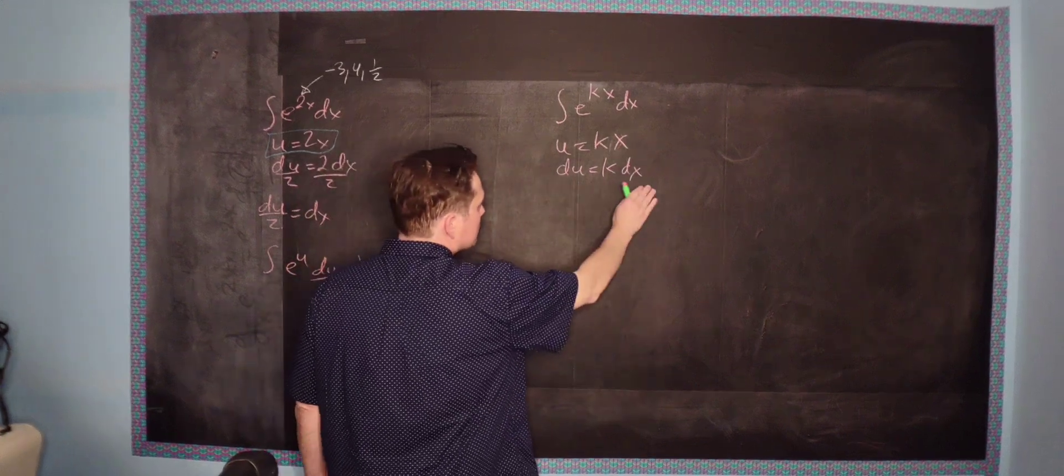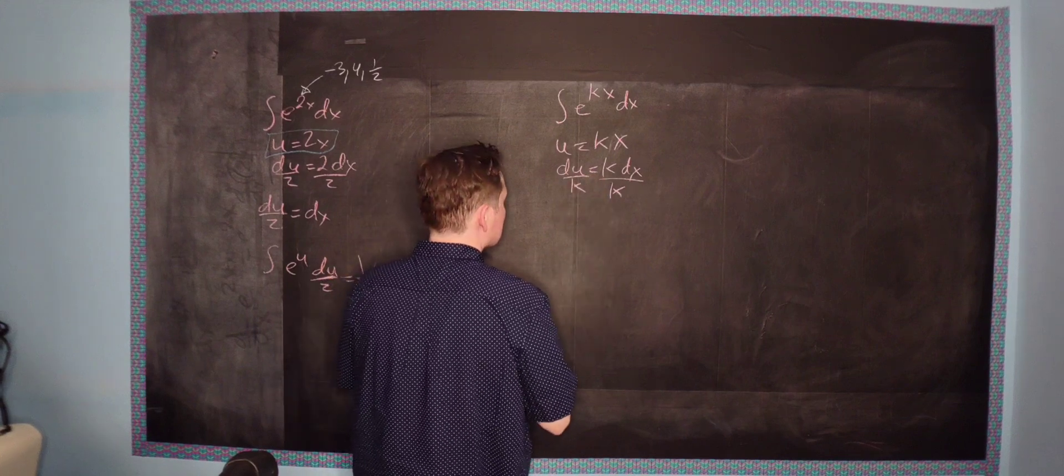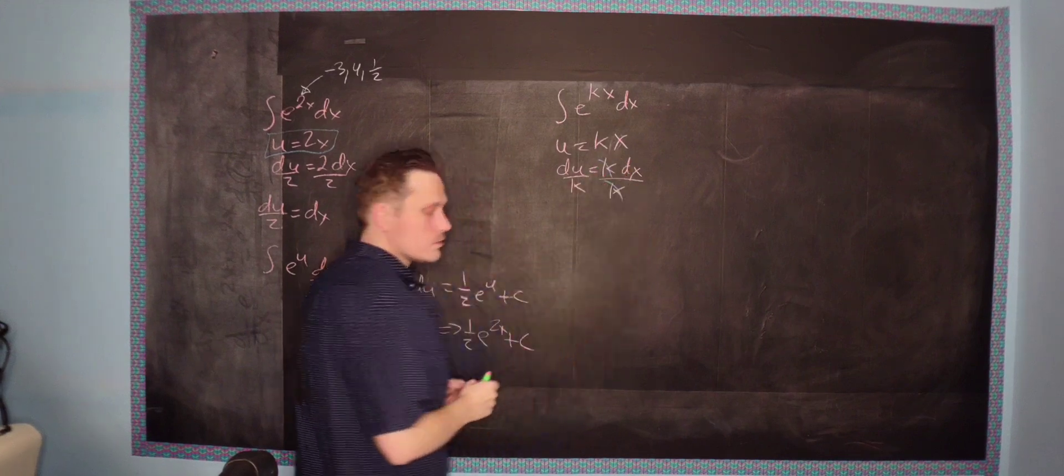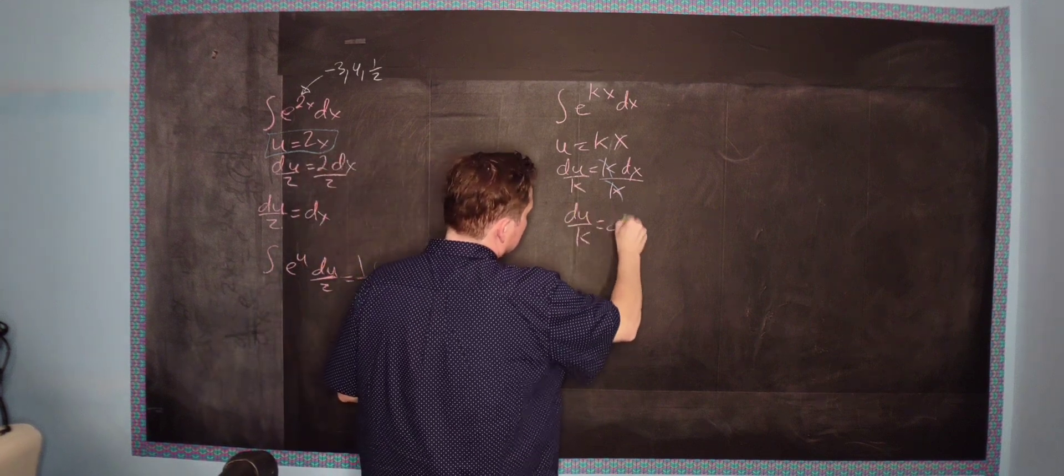So du would be equal to k dx because the derivative of x is 1. Anyway, so du equals k dx. Divide by k on both sides. Divide by k. So here, take a look, friends. This goes away.